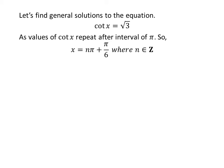Let us find the general solutions. As we know, the values of cot x repeat after the interval of π. So, the general solution is x = nπ + π/6 where n is an integer.